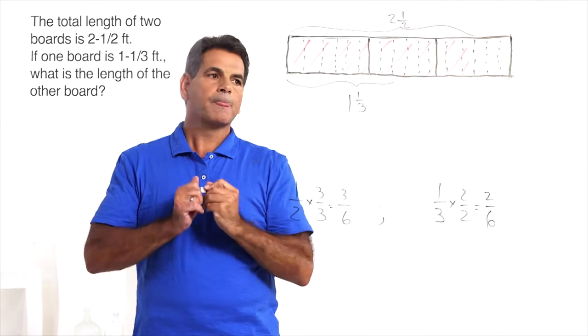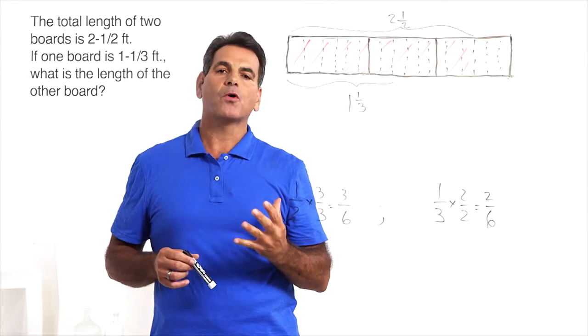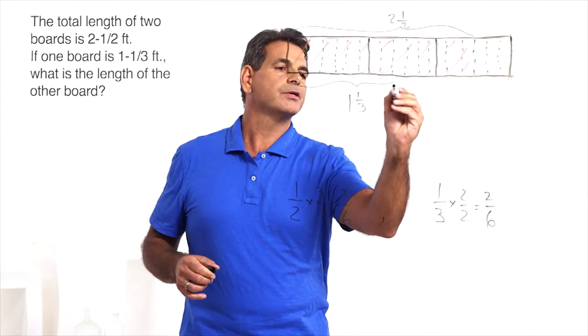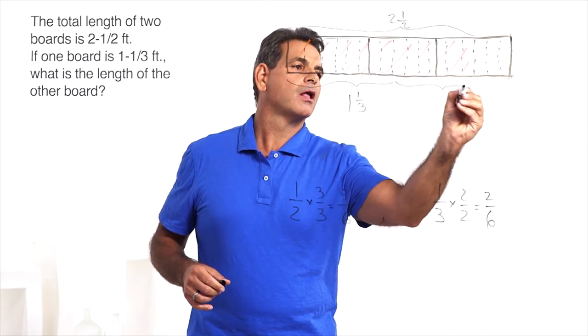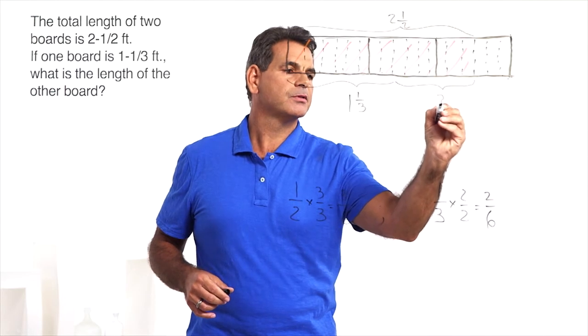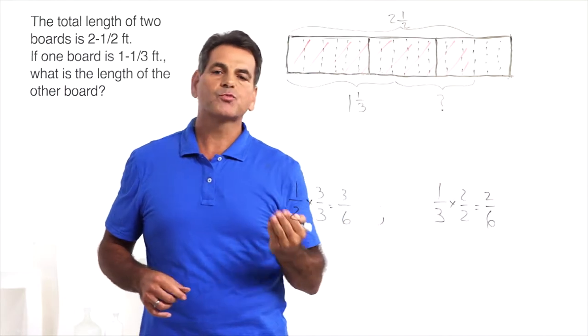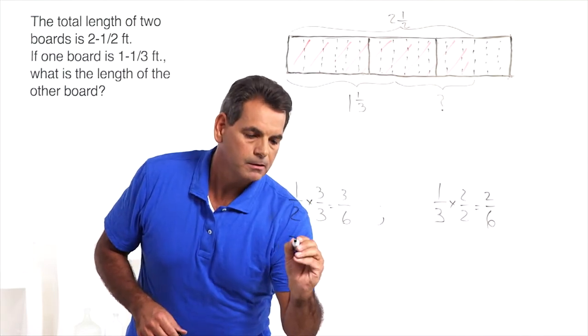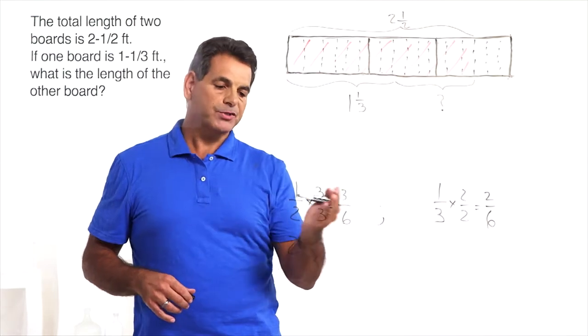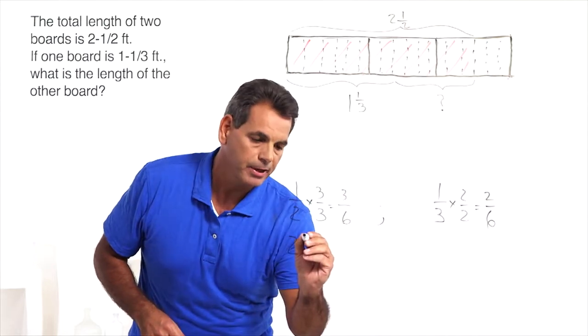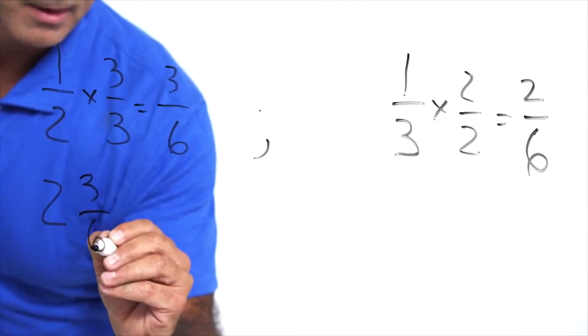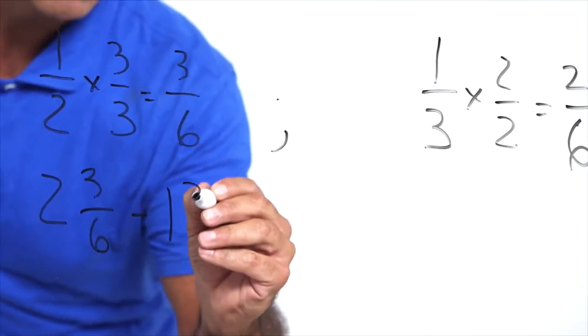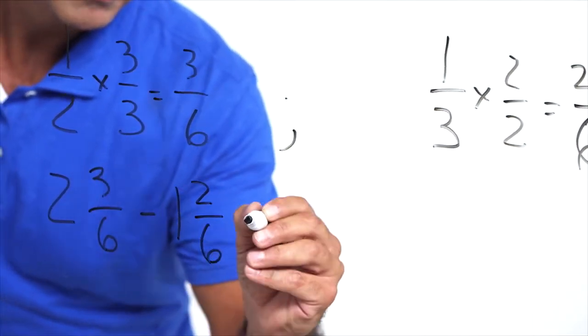Now we can indicate the length of this board in the model because we have it in sixths. 1 and 1 third is equivalent to 1 and 2 sixths. Here's 1 and 1, 2 sixths. Let's indicate that. Now what's the piece we're looking for? Well, we're looking for the other piece that will get us to 2 and a half feet, which is right here. This is our question mark. That's what we're trying to find. So let's write the equation. 2 and a half, but we're going to say 3 sixths because we want common denominators. Minus 1 and 1 third, but we're going to use 1 and 2 sixths.